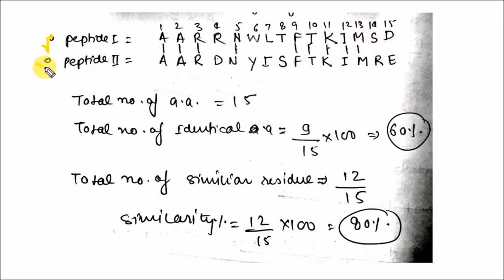Here is the peptide 2 sequence and total number of amino acids is 15. Total number of identical amino acids - identical amino acid means same - that is here you can see 1, 2, 3, 4, 5, 6, 7, 8, and 9. So here 9 are identical residues. So you can calculate identity percent by dividing the identical residues by total residues times 100, that is 60 percent.